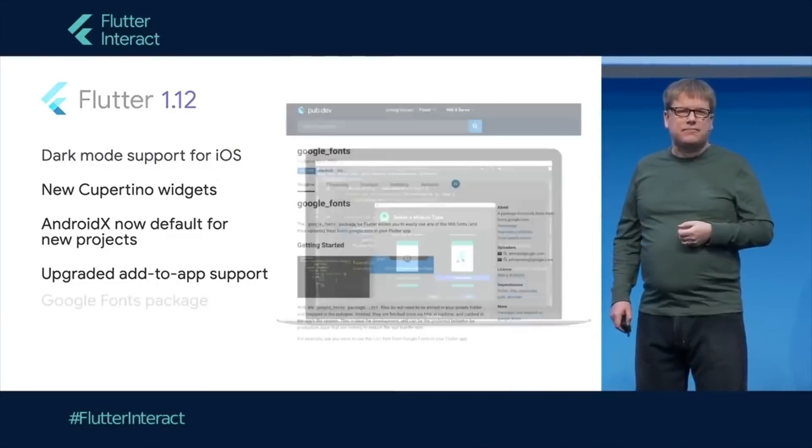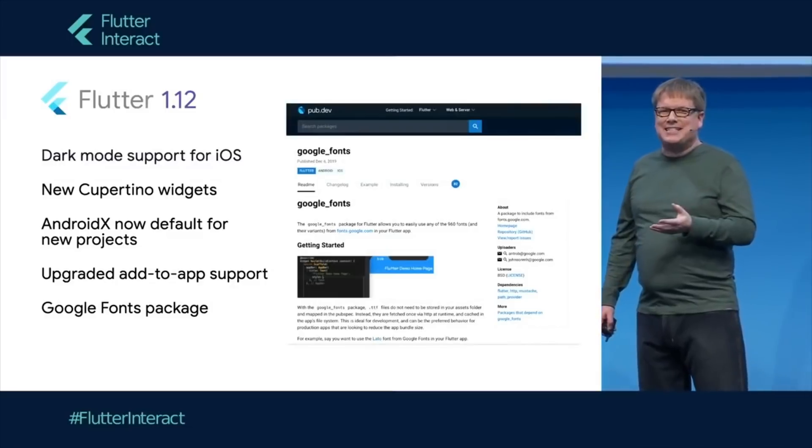The first announcement was Google Fonts. We've got the new Google Fonts package that Matthias mentioned, for easy access to nearly a thousand open source fonts. You can use a lot of fonts at runtime and change fonts in your application without downloading them and placing them in your assets directory — that's a tough job. Now you can do this using a package. Personally I don't use more than one or two fonts in my app, but it's a good thing. You can find it on pub.dev, the package manager for Flutter.